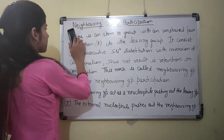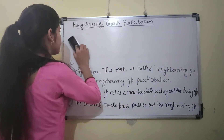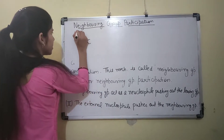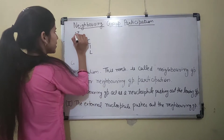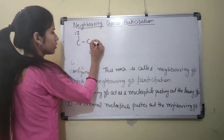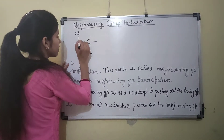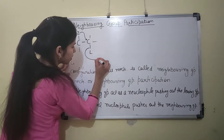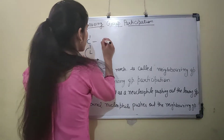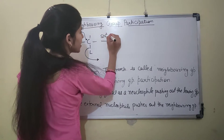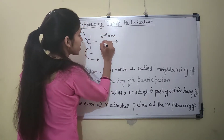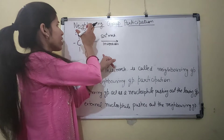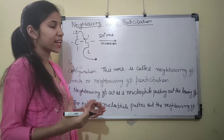This is our molecule. The neighboring group has an unshared pair of electrons and attacks the carbon bearing the leaving group. The leaving group departs under SN2 conditions, resulting in inversion in configuration. There are some properties of neighboring group participation — they form a cyclic intermediate.